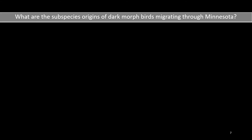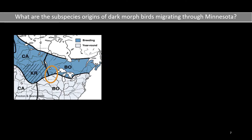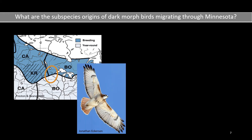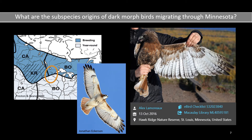So this brings us to our research question: what are the subspecies origins of the dark morph birds migrating through Minnesota? If Minnesota is primarily, if not completely, in the Borealis geographic range, and Borealis is only known to occur in the light morph, why are dark morph birds being observed and documented in Minnesota during fall migration? An example of this is presented in the right-hand picture, which features an adult dark morph red-tailed hawk captured at Hawk Ridge and documented on eBird in 2016.